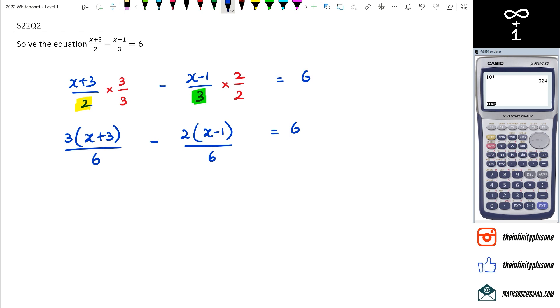So with that in mind, I'm going to put all of them under the same fraction. So I've got 3(X+3) minus 2(X-1) all of that over 6 equals to 6.